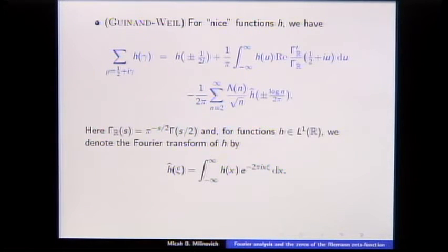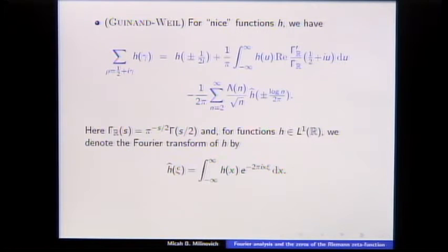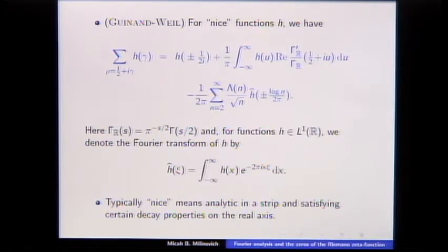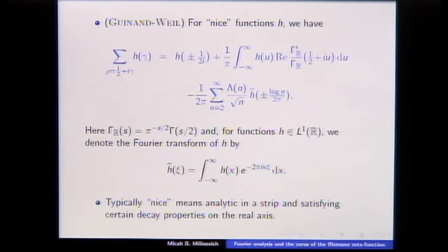The gamma_R of s is just a normalized version of the gamma function that comes from completing zeta, and this is the Fourier transform of h, normalized in the usual way in number theory. 'Nice' typically means analytic in a strip containing the real axis, and you want the function to decay enough so that the sum and integral both converge really nicely.